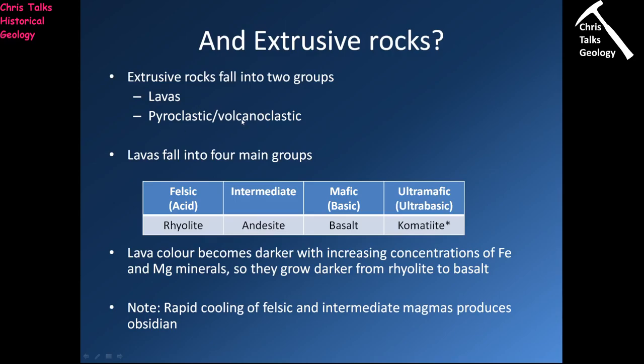As we know, our magmas fall into one of four types: felsic, intermediate, mafic, and ultramafic. The compositions and temperatures of these magmas are different, so we're going to get different minerals associated with each type of magma.